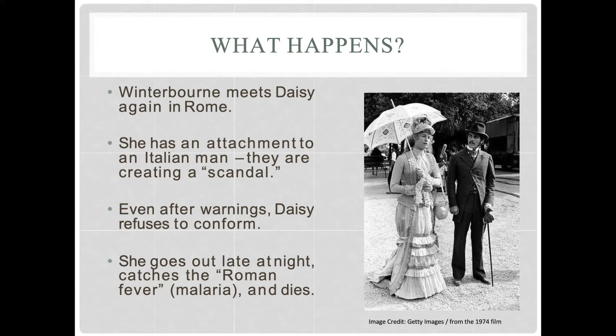The end of the novel is Winterbourne coming to terms with the judgment he's made about her character — was she doing something on purpose or was she innocent and didn't really understand? He grapples with the fact that she has died. The narrator tells us he goes back to his life, and people are also gossiping about him and his attachment to an older woman in Geneva. So there's a full-circle quality to the text: we end up learning that people are talking about him the same way he was thinking about Daisy.